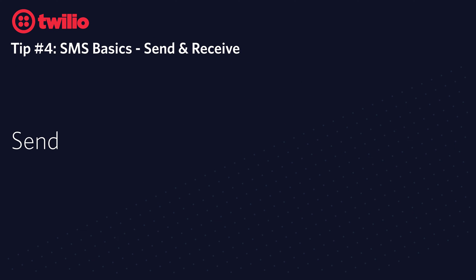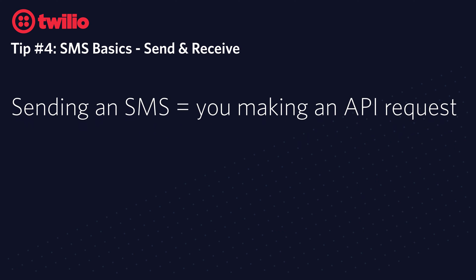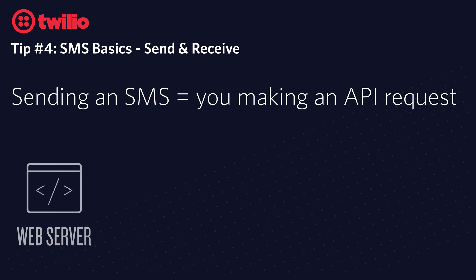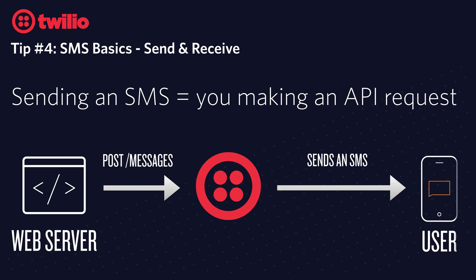To send an SMS, you simply make an API request to Twilio to send an outbound message. For instance, your web server sends a POST request to /messages inside of Twilio, and Twilio will send an SMS to a user.